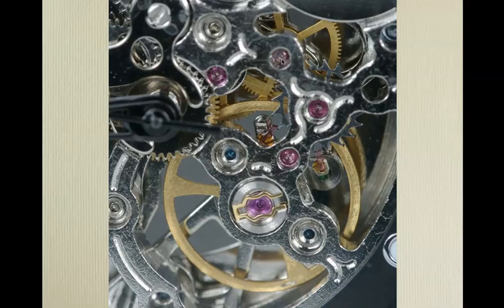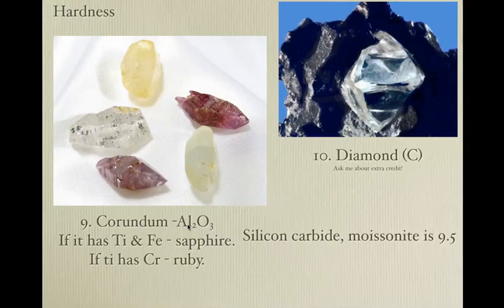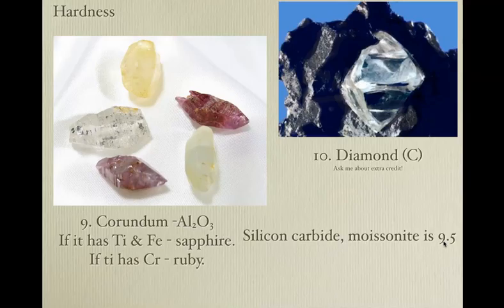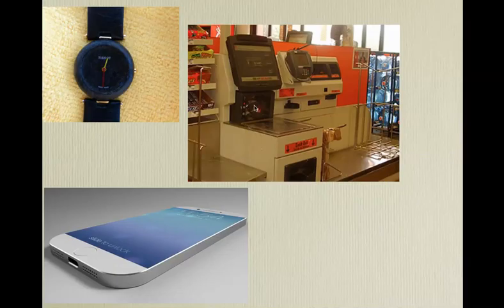We're starting to get into the harder and less common minerals. This is topaz, hardness number eight — we use these crystals as pivot points in watches because they don't wear down quickly. Here is corundum, which is an aluminum oxide. If it has titanium and iron, we call it sapphire; if it has chromium, we call it ruby. Here is a diamond — if you bring some to class and donate them, it's extra credit. Silicon carbide, also known as moissanite, is about a 9.5 on the scale — it's synthetic so not really a mineral, but I thought I'd throw it in.